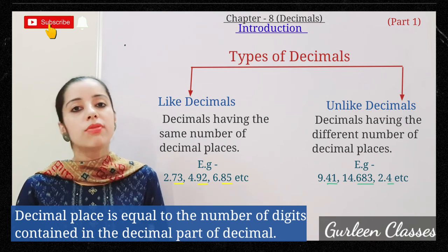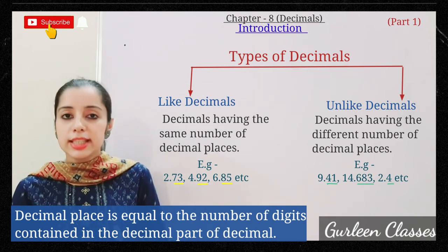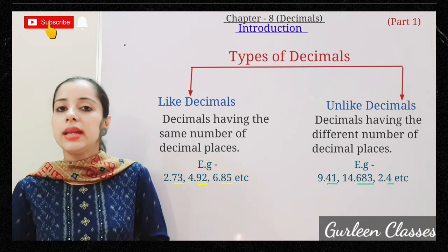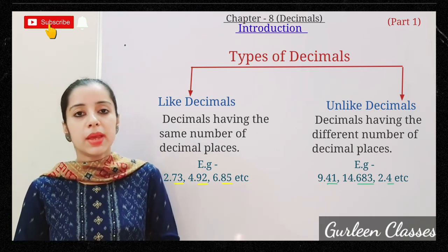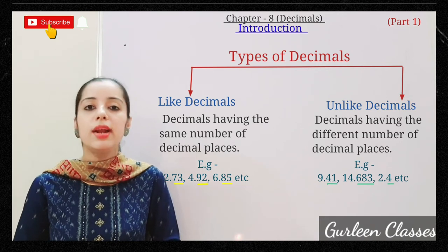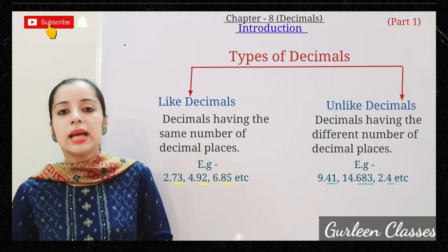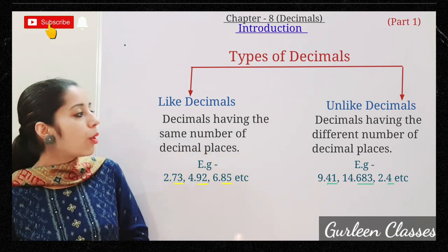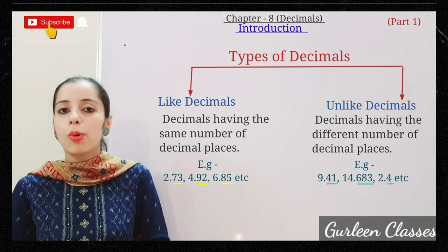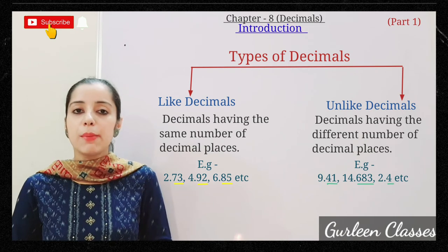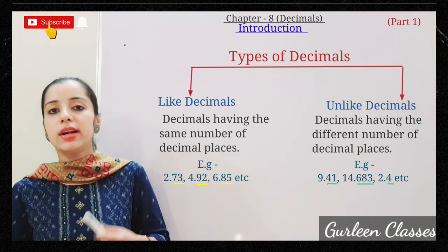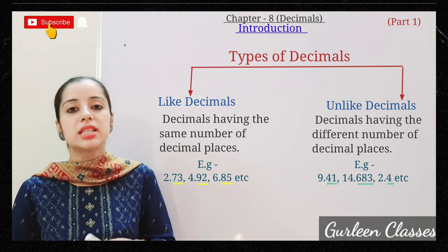Unlike decimals are decimals that have a different number of decimal places. For example: 9.41, 14.683, and 2.4 are unlike decimals because after the decimal point there are different numbers of decimal places in each.